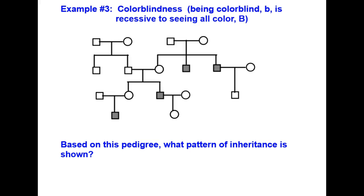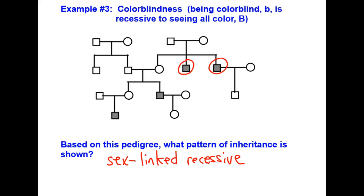Our last example is color blindness. Being colorblind, little b, is recessive to seeing all color, big B. Based on this pedigree, what pattern of inheritance is shown? If you said sex-linked recessive, you are correct. The dead giveaway is that the only individuals showing colorblindness — the shaded ones — are all male. No females ended up inheriting the trait, only the males did. This is a clear indication it must be a sex-linked trait.